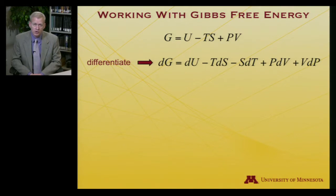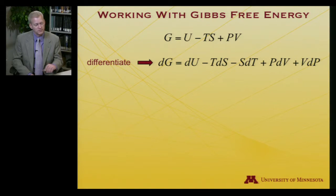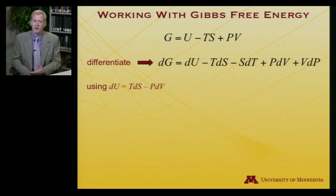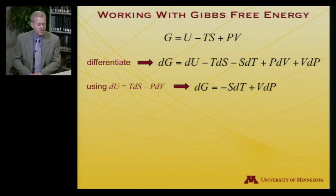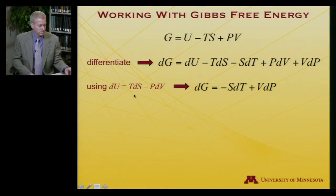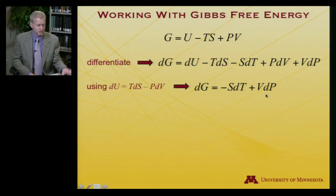When I take a full differential of the Gibbs free energy, I get dU minus TdS minus SdT plus PdV plus VdP. Making the usual first and second law substitution — dU equals TdS minus PdV — I get dG equals minus SdT plus VdP. The TdS terms cancel and the PdV terms cancel; these are the only two terms that survive.